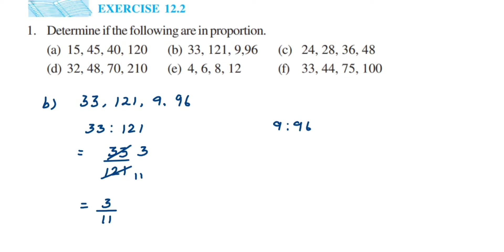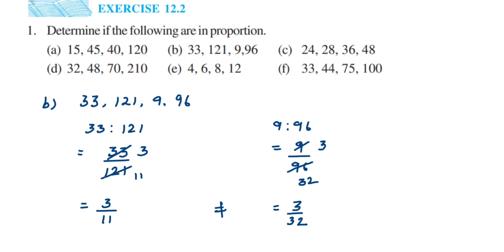For 9 by 96: cancel in the three table — three threes are 9, three thirty-twos are 96 — so we get 3 by 32. Comparing: the first ratio is 3 by 11 and the second is 3 by 32. They are not equal, which means they are not in proportion. Answer is No.